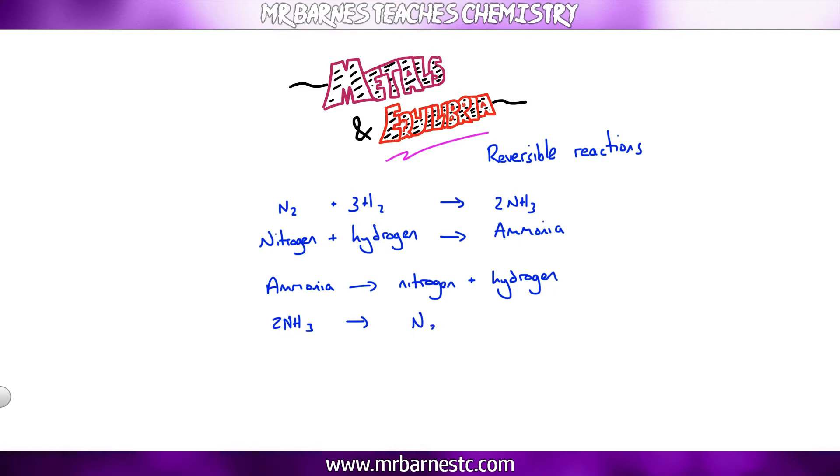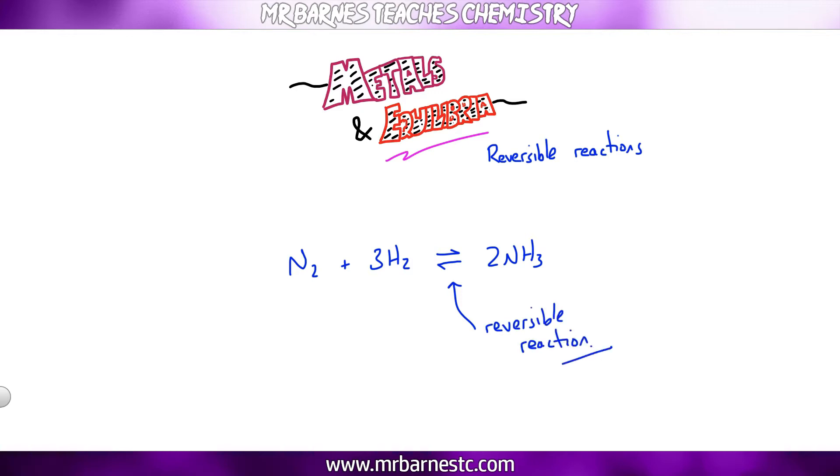Now if we were to write this it's going to take a long time so there's an easier way. If you have a reaction where both the forward and the backward reactions are occurring we can put a reversible sign in and that's what this is here.